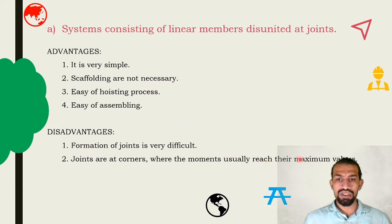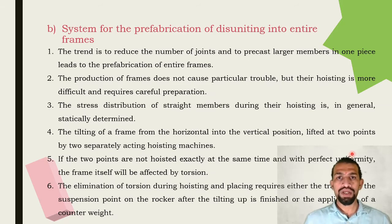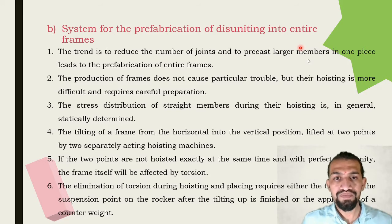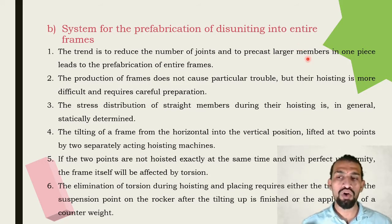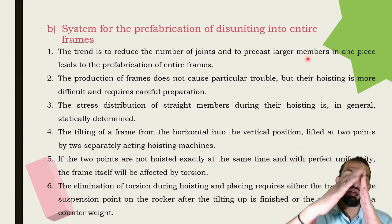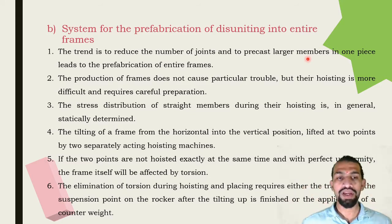Method 2: systems for prefabrication by disuniting into entire frames. The trend of reducing the number of joints and precasting large members in one piece leads to prefabrication of an entire frame. The production of frames does not cause particular trouble, but their hoisting is more difficult and requires careful preparation. The stress distribution of straight members during their hoisting is in general statically determined.